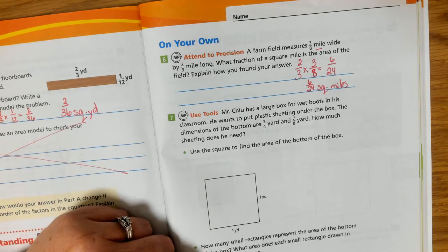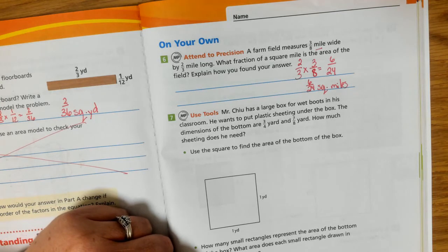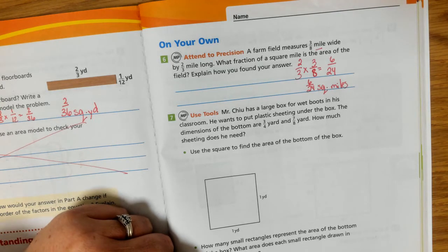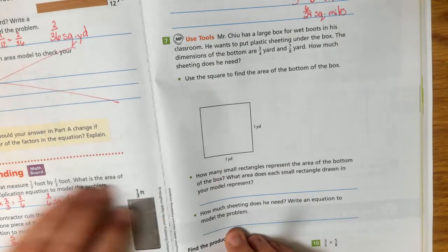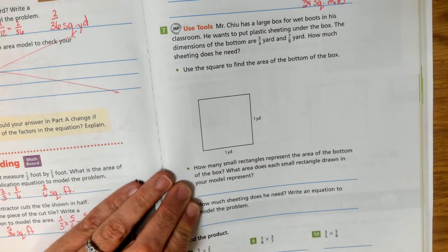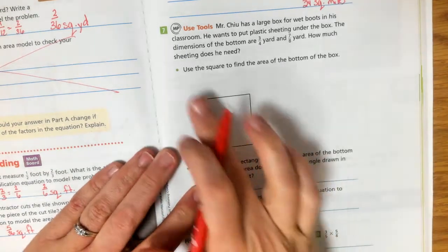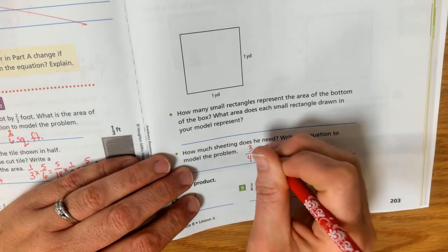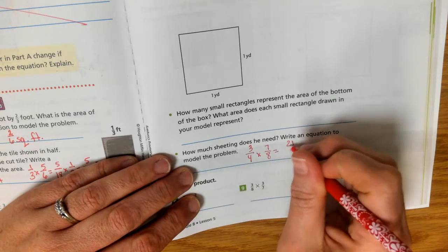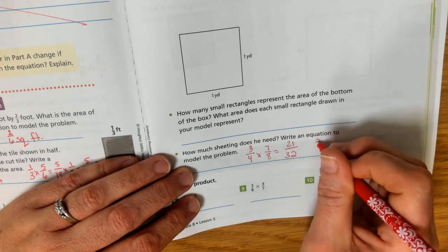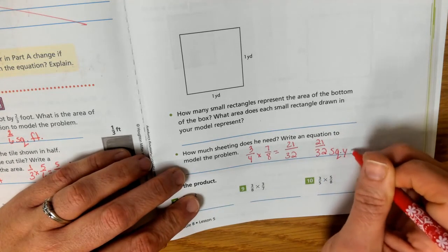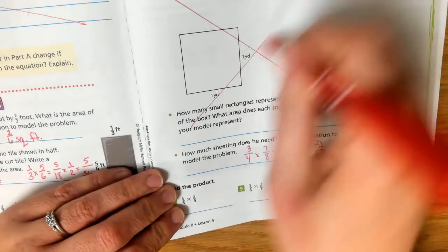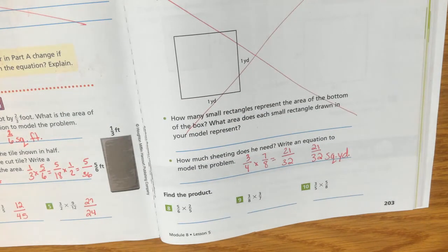Mr. Chu has a large box for wet boots in his classroom. He wants to put plastic sheeting under the box. The dimensions of the box are 3 fourths yard and 7 eighths yard. How much sheeting does he need? So we can show our picture, because we know we're going to be multiplying. 3 fourths times 7 eighths. So if you want to do the picture, you can. Or you can just do the 3 fourths times 7 eighths. So if we were to just do our equation. 3 fourths times 7 eighths. 3 times 7 is 21. 4 times 8 is 32. So it would be 21 32nds square yards. You can skip this part. You don't have to do that part. You can just jump right down to writing your equation and solving.